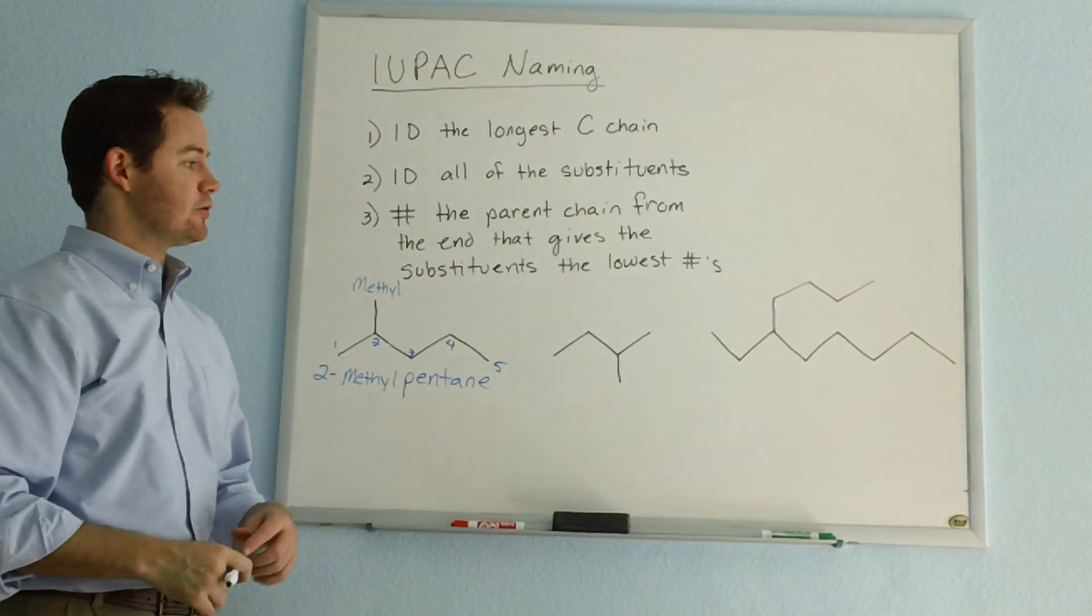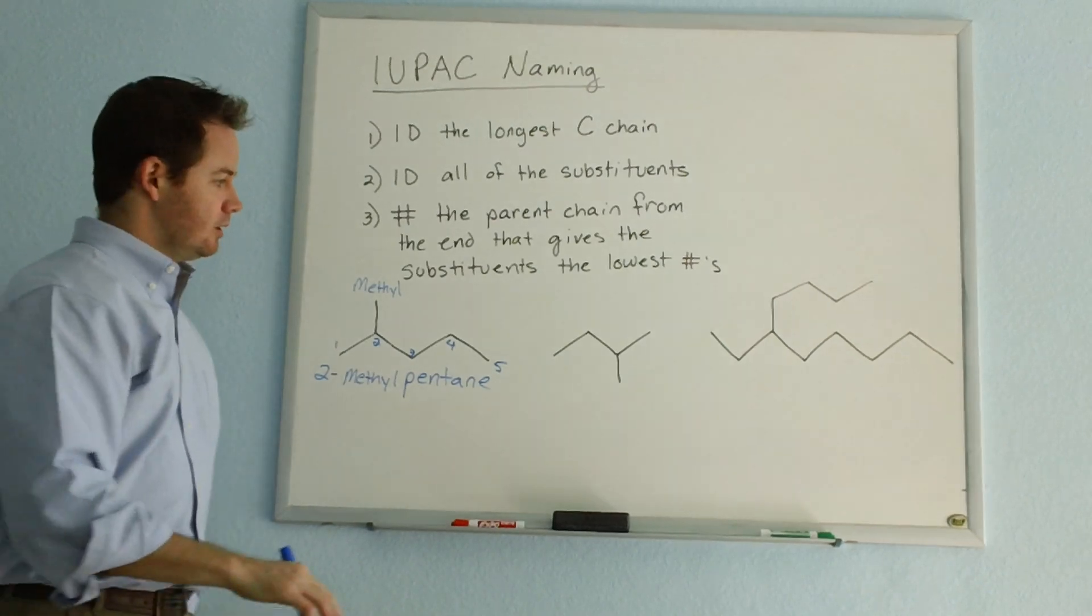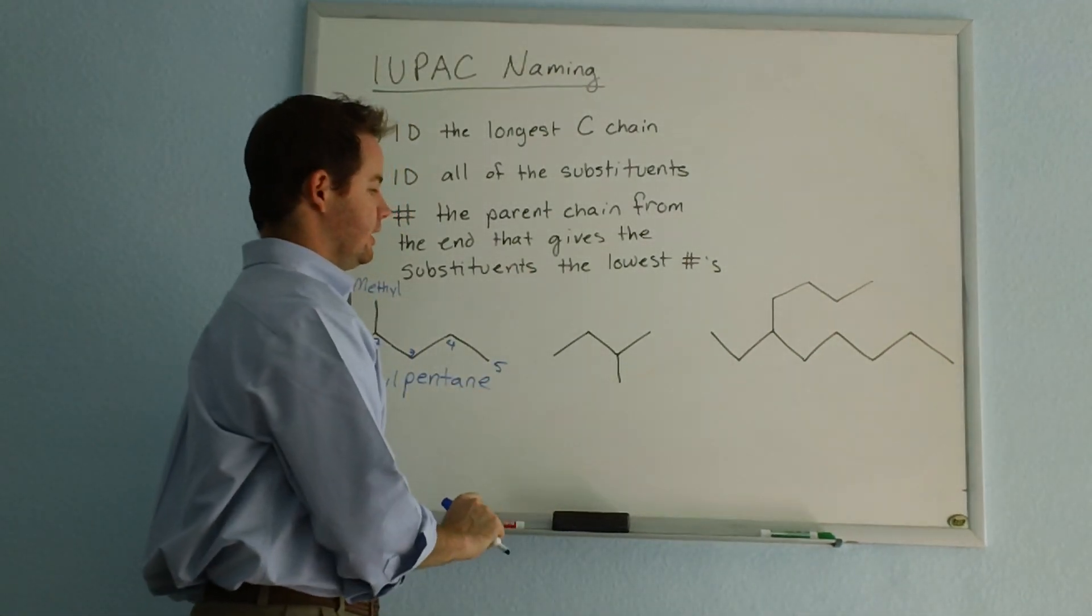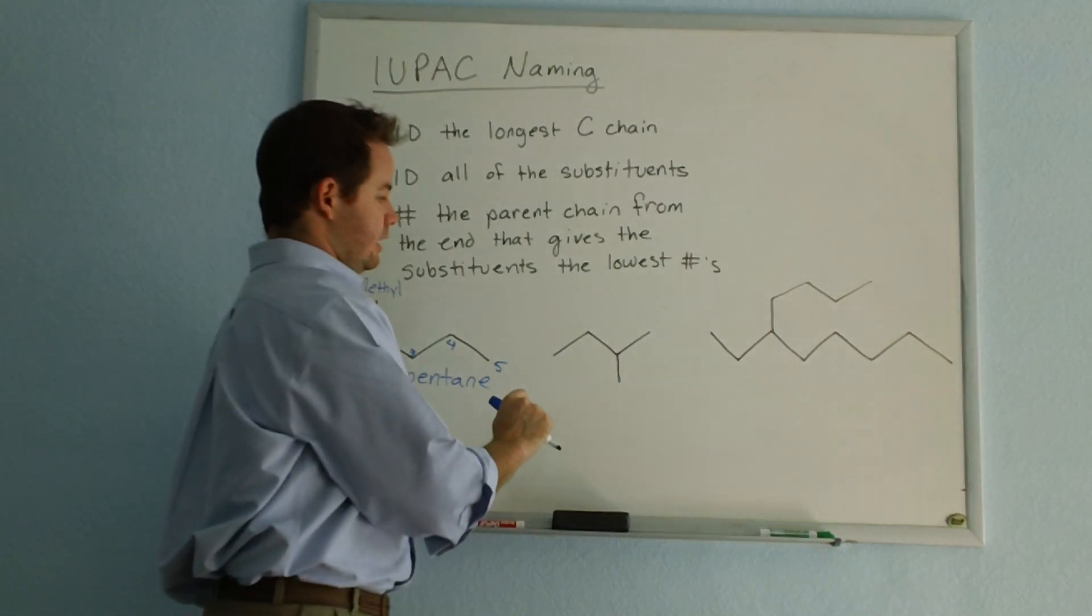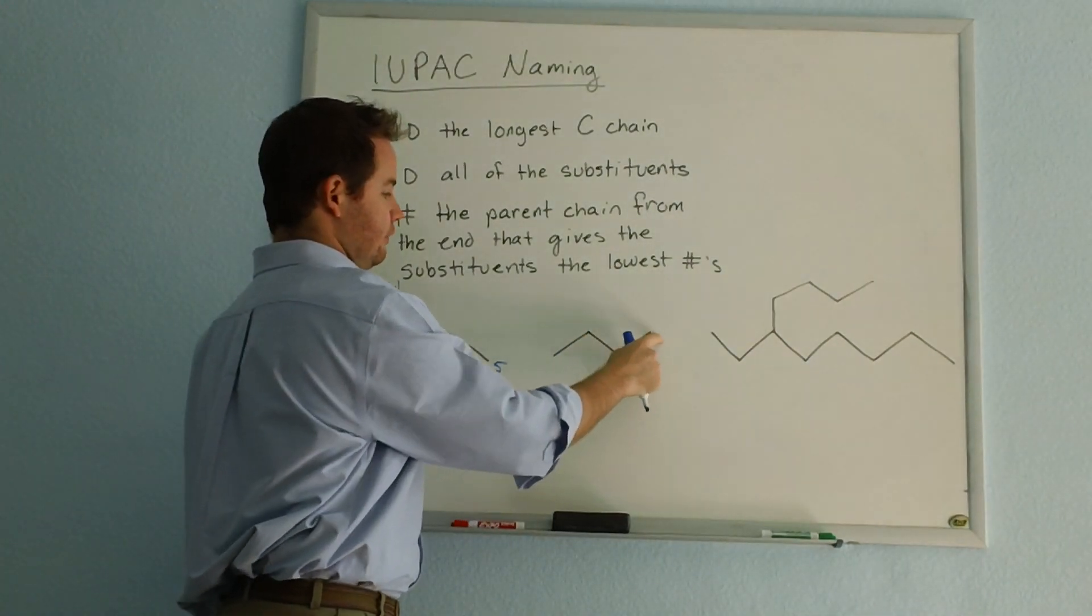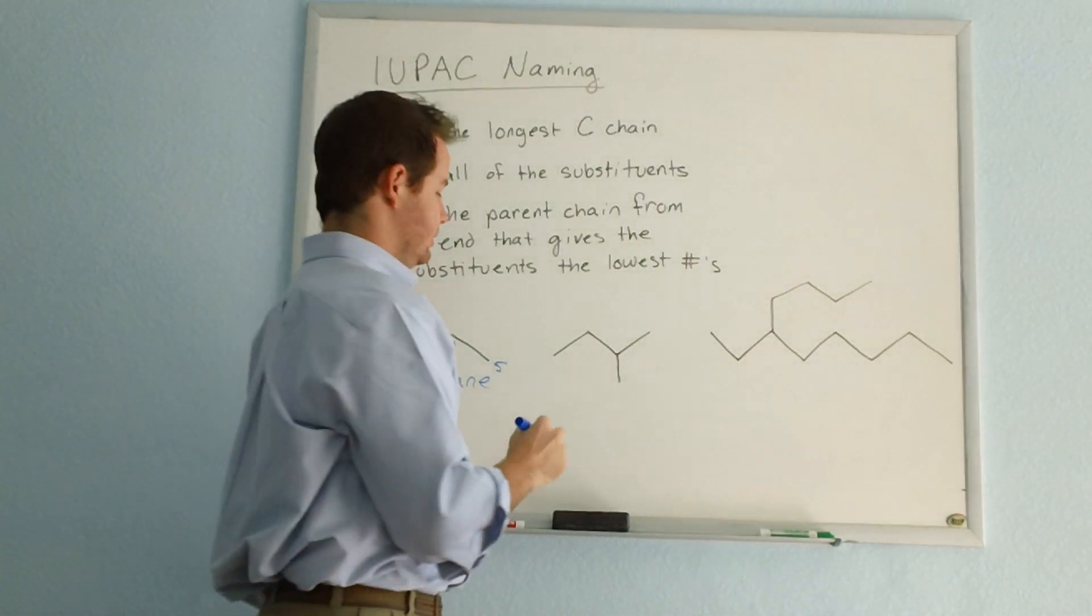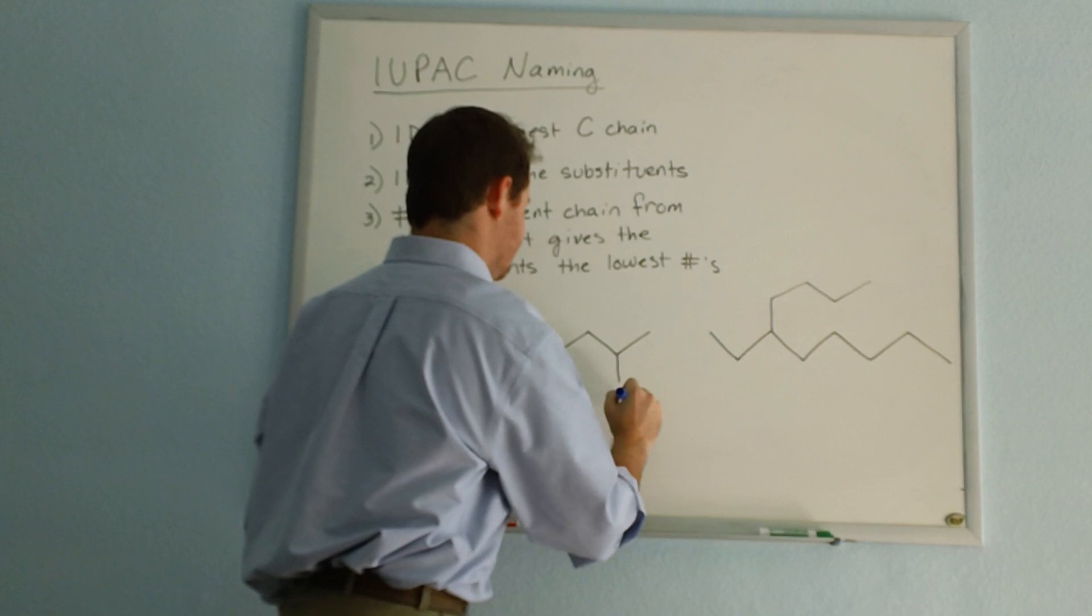Let's see if we can name these other two compounds. Going through these rules again, moving on to compound number two. If we number it, we have a long carbon chain of one, two, three, four carbons. Our prefix for four is but. So this will be a butane.